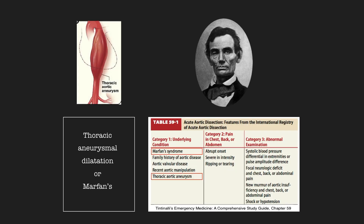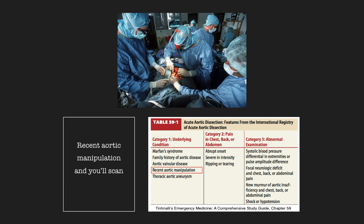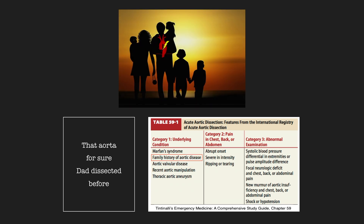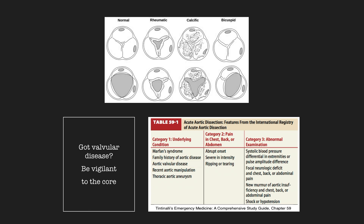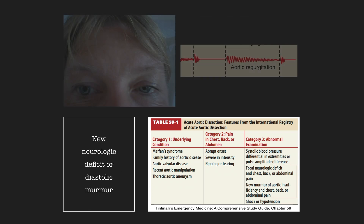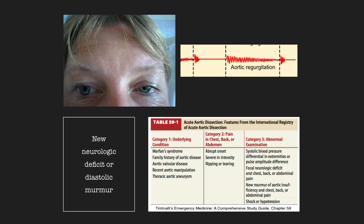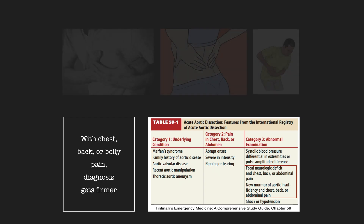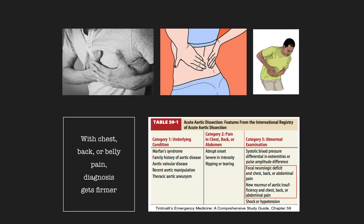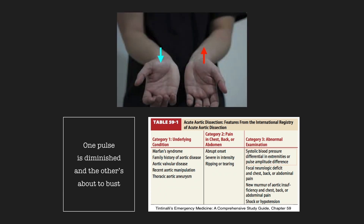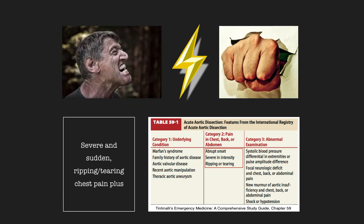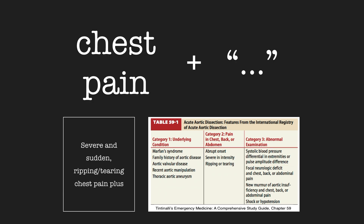Thoracic aneurysmal dilatation of Marfan's, recent aortic manipulation — scan that aorta for sure. Dad dissected before, got valvular disease — be vigilant to the core. New neurologic deficit or diastolic murmur, with chest, back, or belly pain — diagnosis gets firmer. One pulse is diminished and the other's about to bust. Severe and sudden ripping, tearing, chest pain plus.